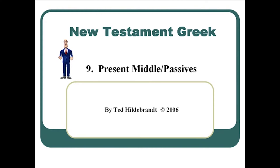Welcome to chapter 9, the present middle passives. In this chapter, we're going to make the shift away from the present active indicative verb to include the middle and passive voices. In order to do that, we'll have to understand how the middle and passive work in Greek. We're also going to introduce some other aspects of how the present tense form manifests itself in narrative, including aspect and action start. We've also got our sixth chant for the luo verb for the middle passive.